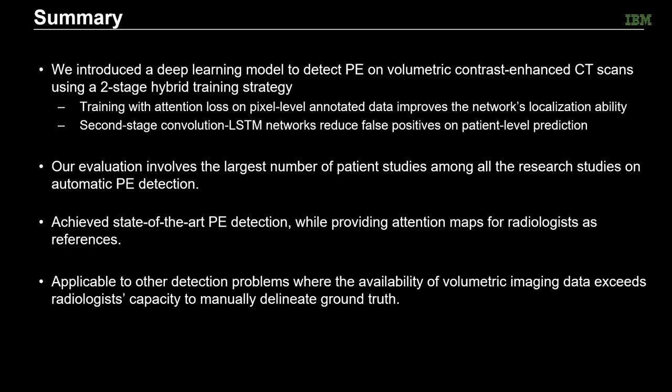To summarize, in this work we presented a deep learning model to detect PE on volumetric contrast-enhanced CT scans using a two-stage hybrid training strategy. In stage 1, we showed that training with attention loss on pixel-level annotated data can improve the network's localization ability. The second-stage convolutional LSTM network can reduce false positives on patient-level prediction. Our evaluation involves the largest number of patient studies so far among all research studies on automatic PE detection. We achieved state-of-the-art PE detection results while providing attention maps for radiologists as references. Our proposed methods can also be applied to other detection problems.